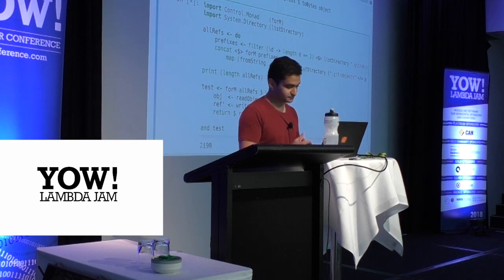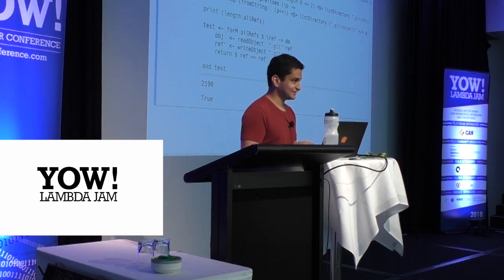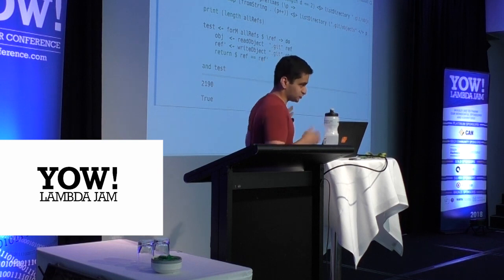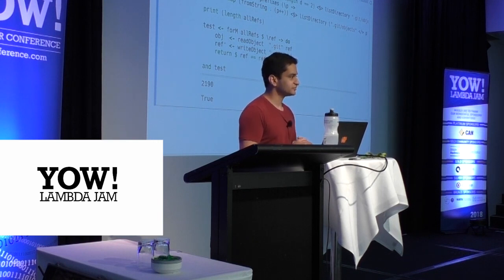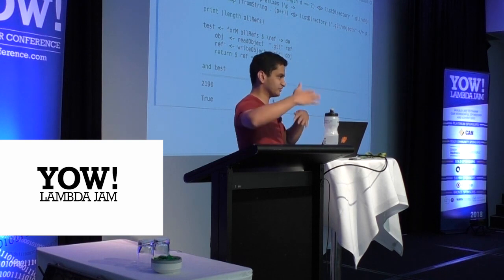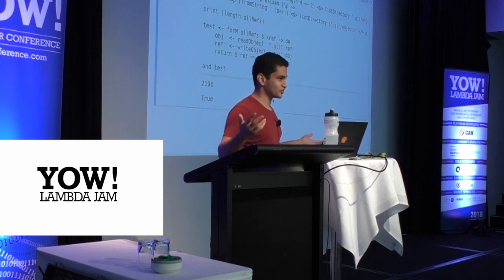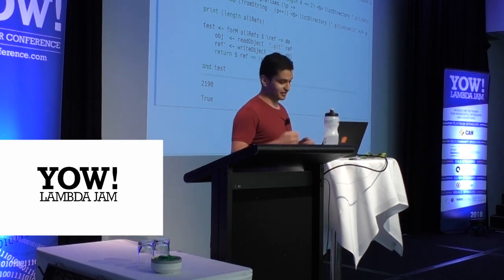That's actually it. That's git. What have I not shown you? Where are the diffs — what happens when you run git diff? Git diffs are computed on the fly. Git doesn't actually store any diffs. What I've shown you is that it stores every version of every file, which blew my mind when I first learned about it. How does it work then? And this is how it works.